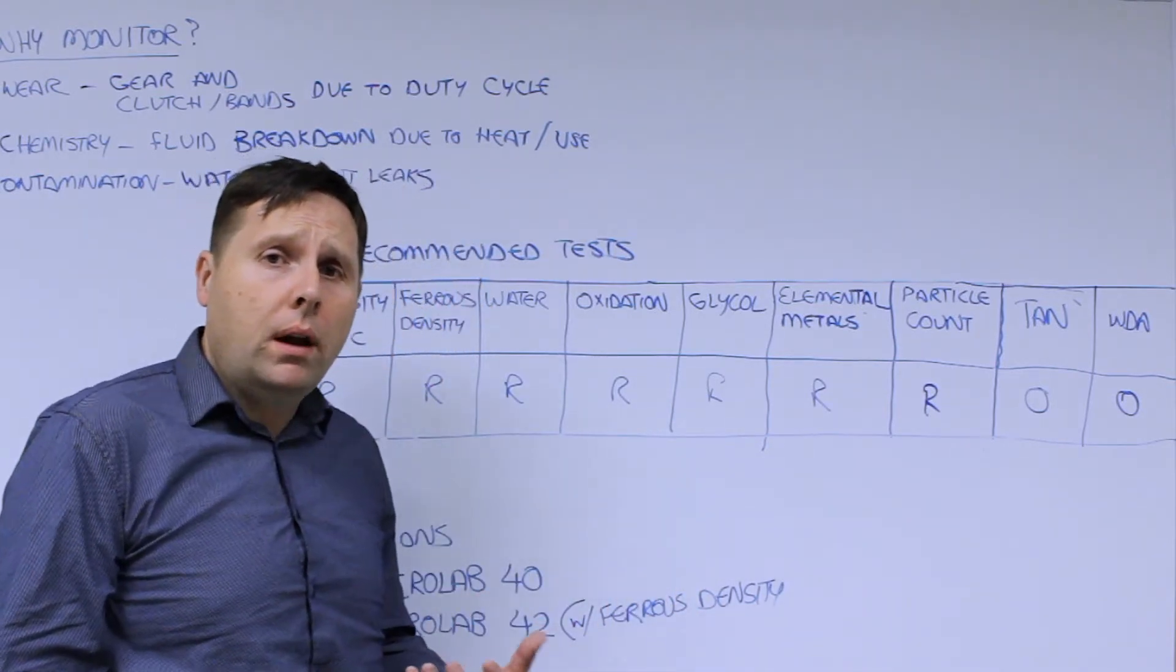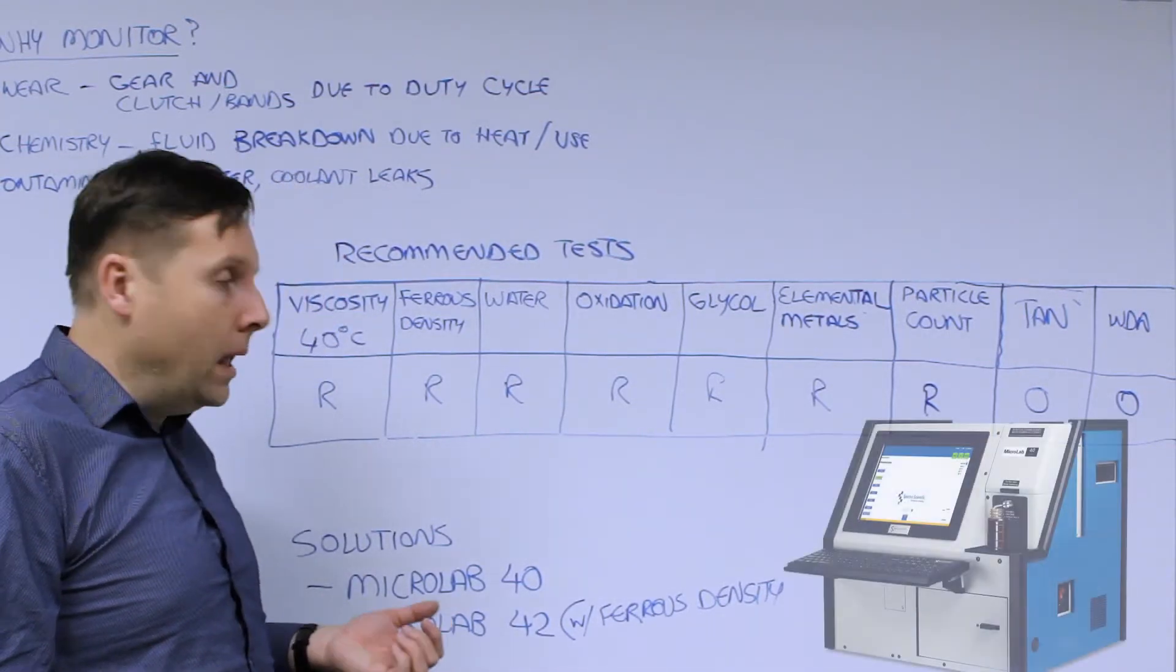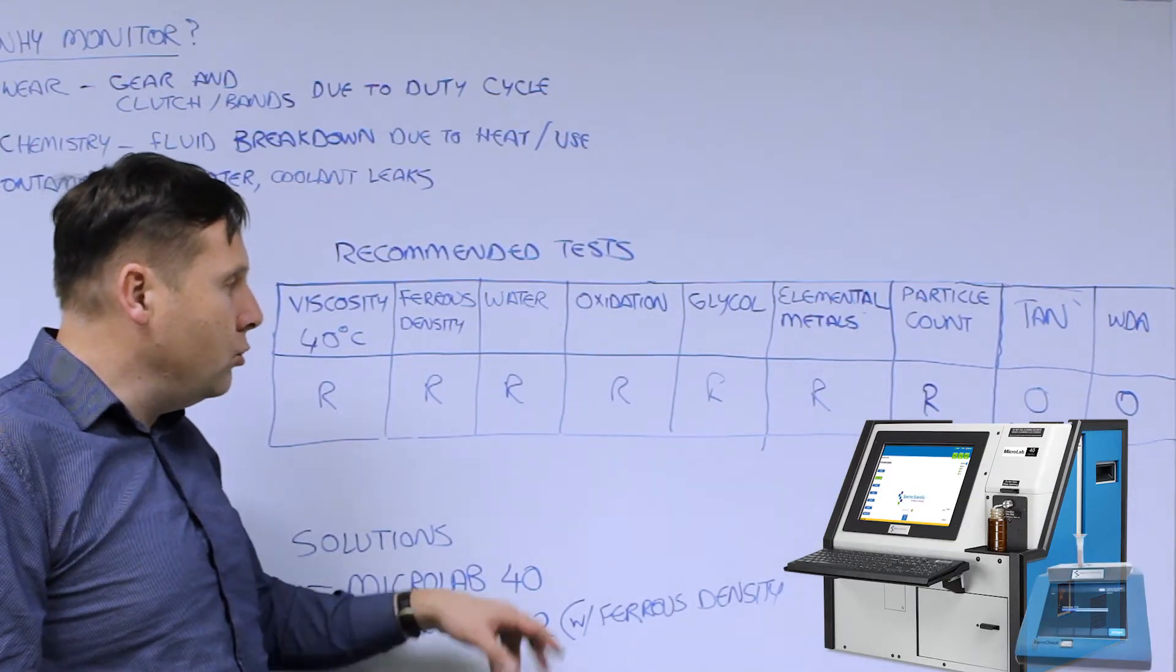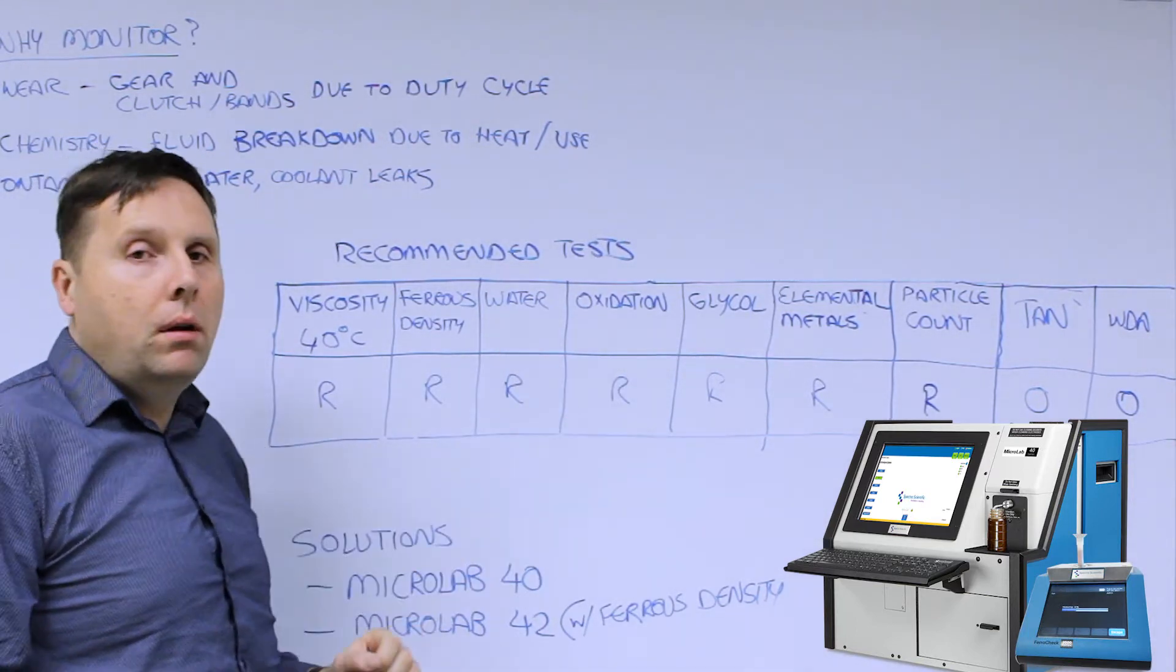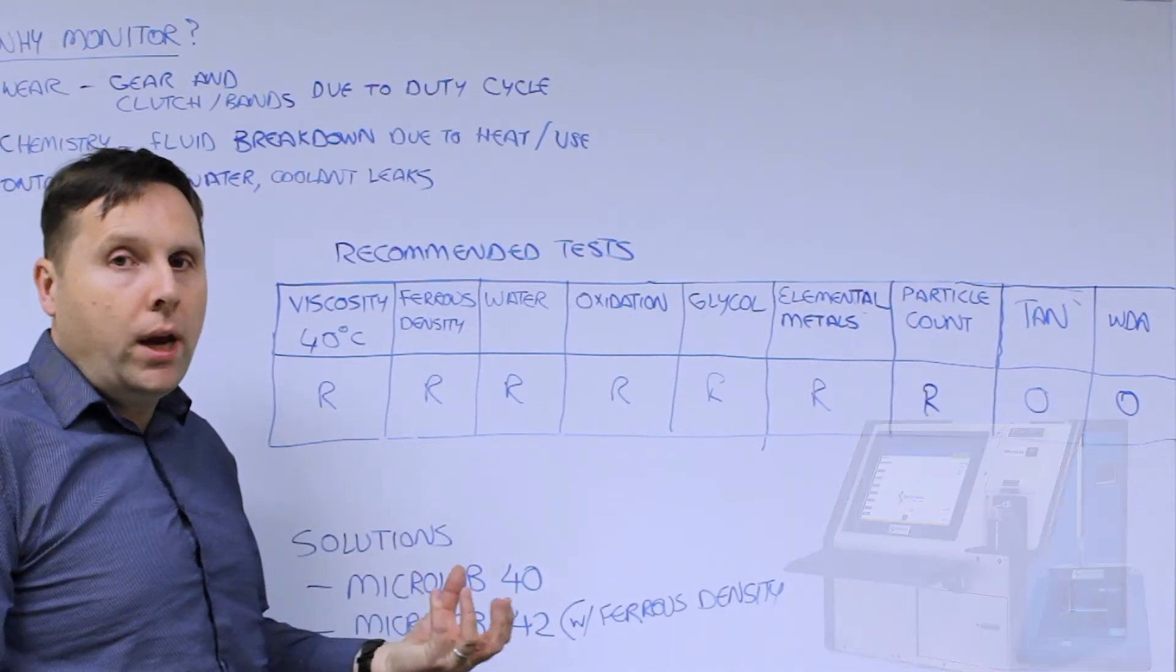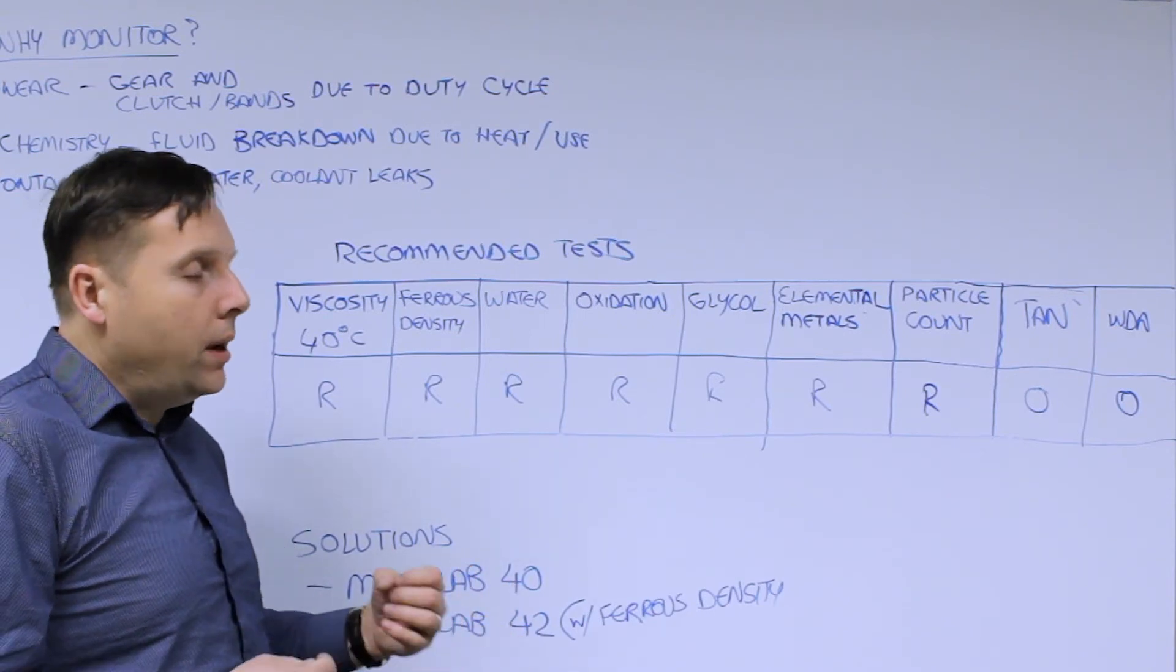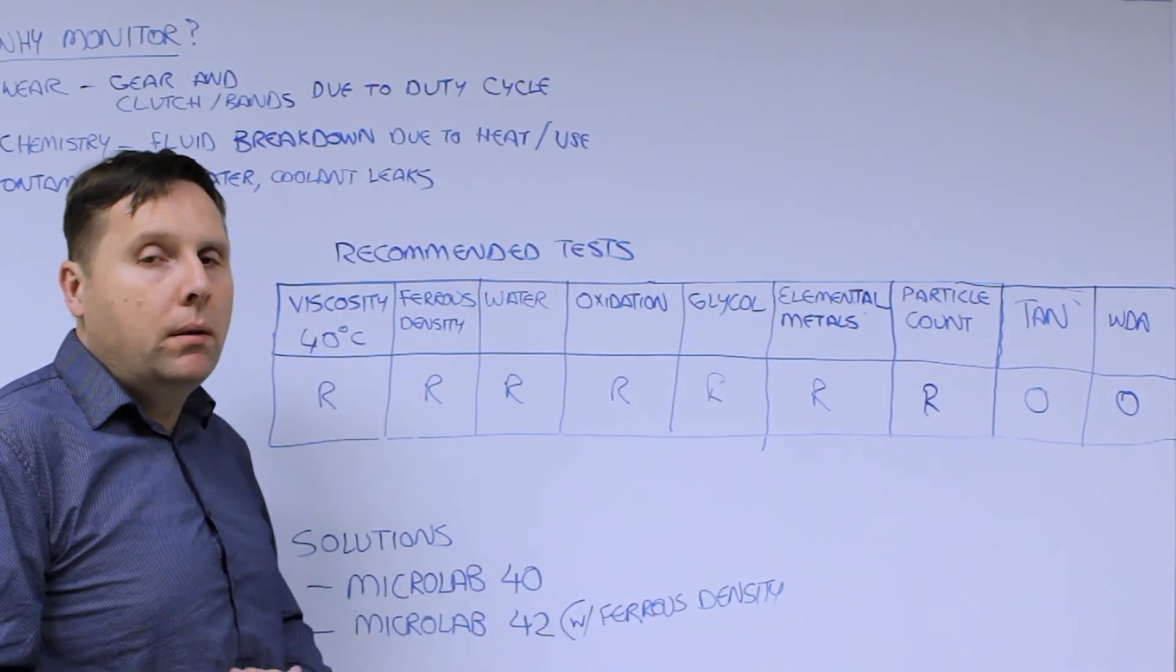What solutions do we recommend for on-site analysis? We strongly recommend the Microlab 40 system because it checks all these tests that are in place, particularly the Microlab 42 because it includes ferrous density additional to this tool. So you've got all these tests there. Everything that's recommended can be done on one check. The viscosity of the fluid is relatively consistent in a low viscosity range, so it works well for that product because it's able to pump it through and you get your recommendations immediately.